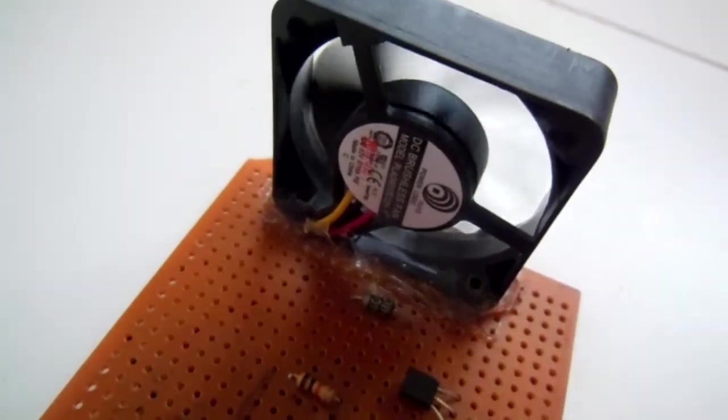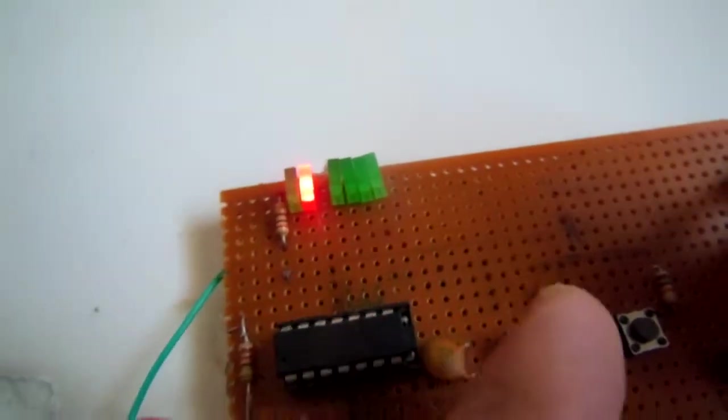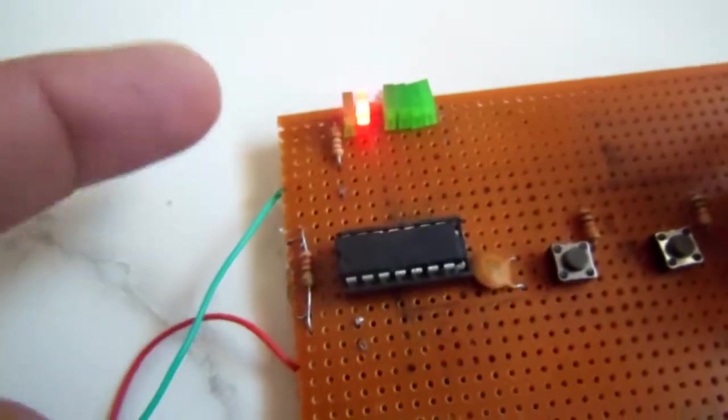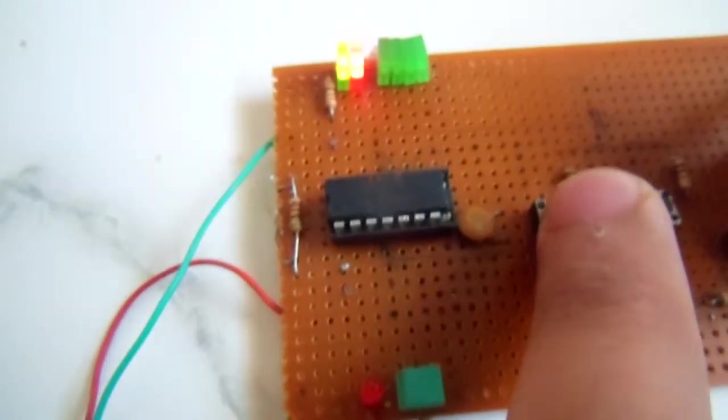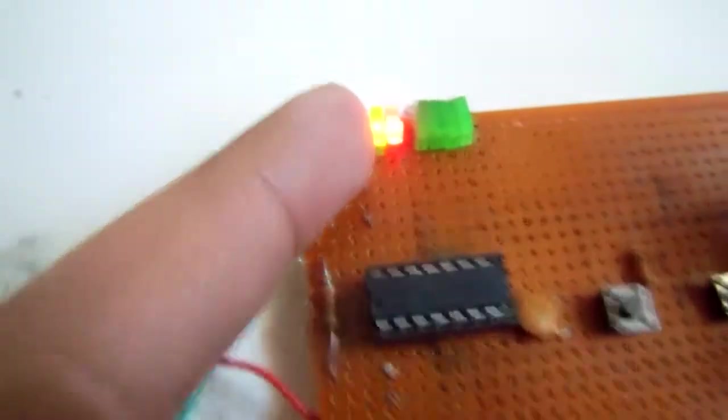The microcontroller is in normal operation mode. This LED is now off and this one is blinking. This button is for external interrupt. When you press this button, the green LED will stop blinking and the red will start blinking.